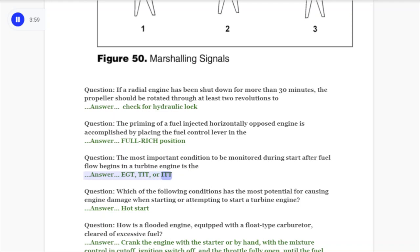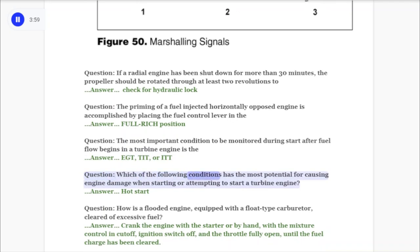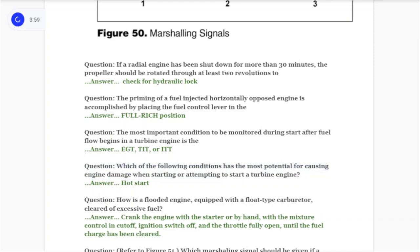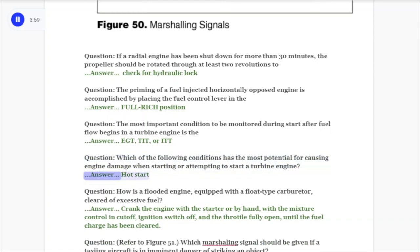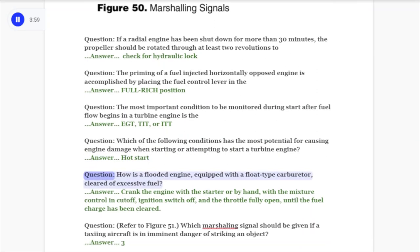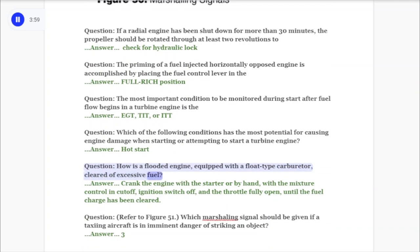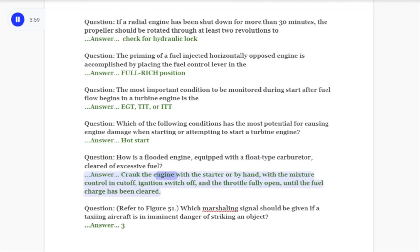Question: Which of the following conditions has the most potential for causing engine damage when starting or attempting to start a turbine engine? Answer: Hot start. Question: How is a flooded engine equipped with a float-type carburetor cleared of excessive fuel? Answer: Crank the engine with the starter or by hand with the mixture control in cutoff, ignition switch off, and the throttle fully open until the fuel charge has been cleared.